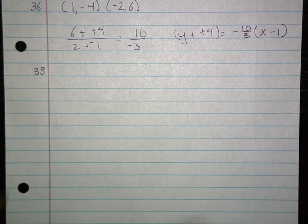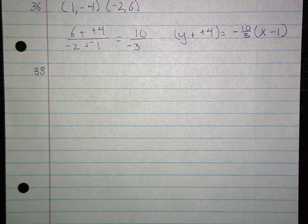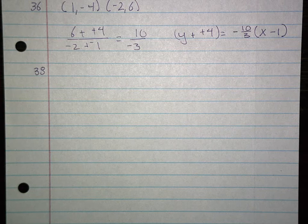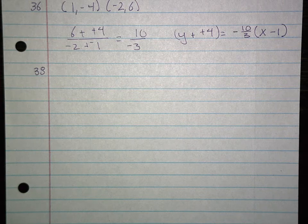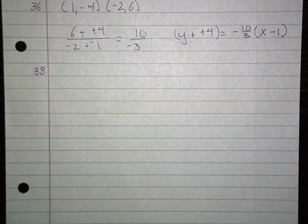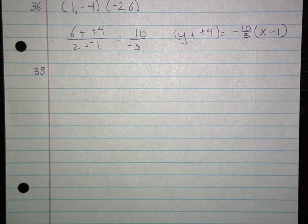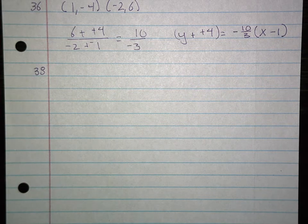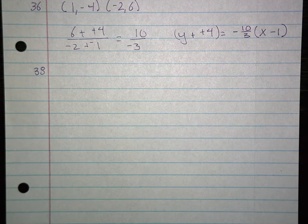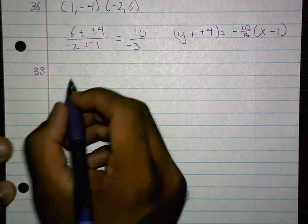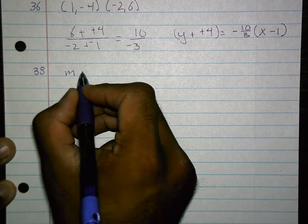38. Write the equation in standard form. So remember when it comes to standard form, the x and y need to be on the same side. The coefficient, or the a term, has to be positive and there can't be any fractions anywhere. 38 gives me an m and it passes through a point, so I'm going to plug this into point-slope form.